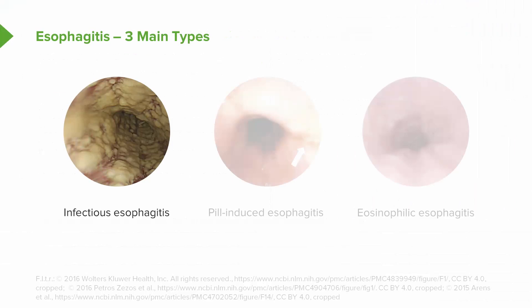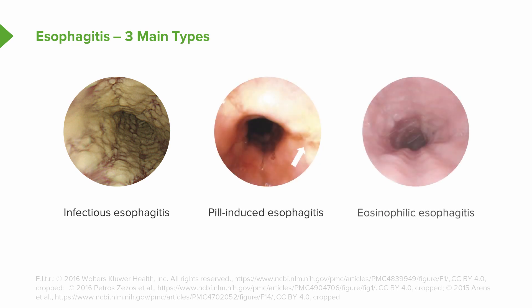There are three main types of esophagitis. The first is infectious esophagitis. The second is pill-induced esophagitis. And the third is eosinophilic esophagitis. We'll talk about each of these in detail.